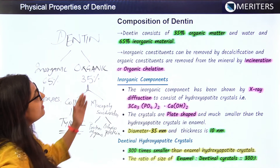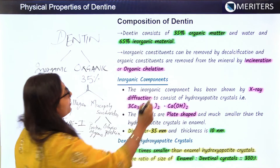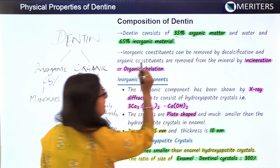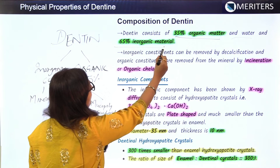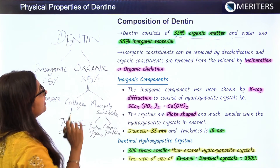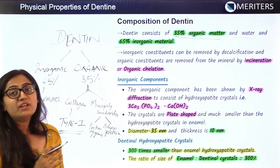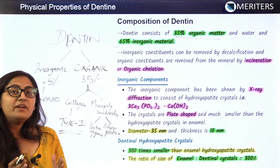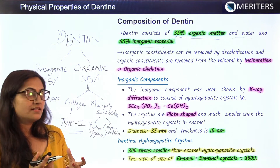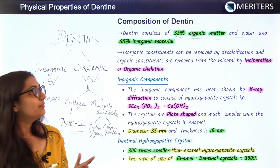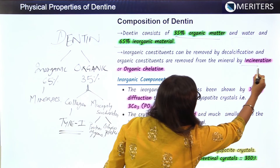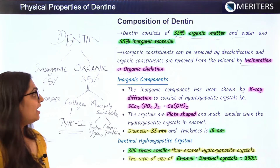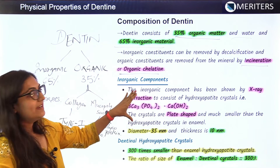Dentine consists of 35% organic matter and water, and 65% inorganic material. The inorganic constituents can be removed by decalcification, which applies to the mineral components. The organic constituents are removed by the process known as incineration and organic gelation.